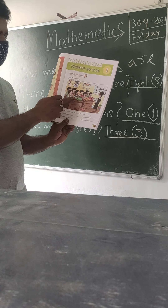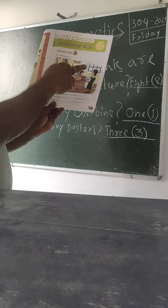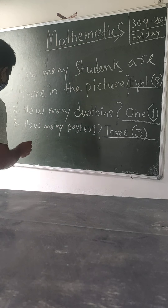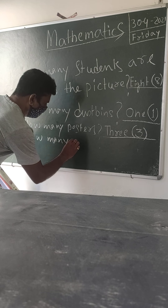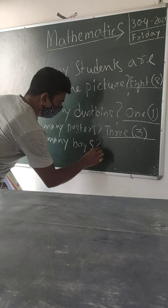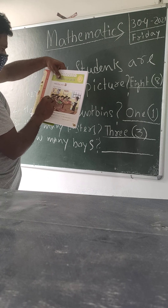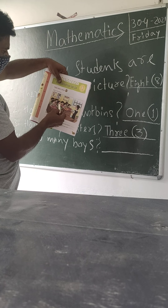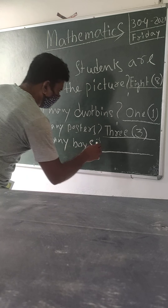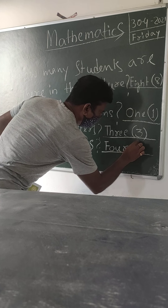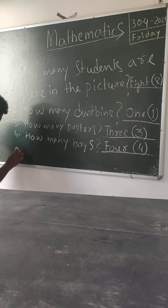Next, the fourth question: how many boys are there? You will have to segregate boys and girls by their dress. Looking at the picture, one, two, three, four children have one type of dress — those are the boys. So there are four boys, and the spelling of four is F-O-U-R.